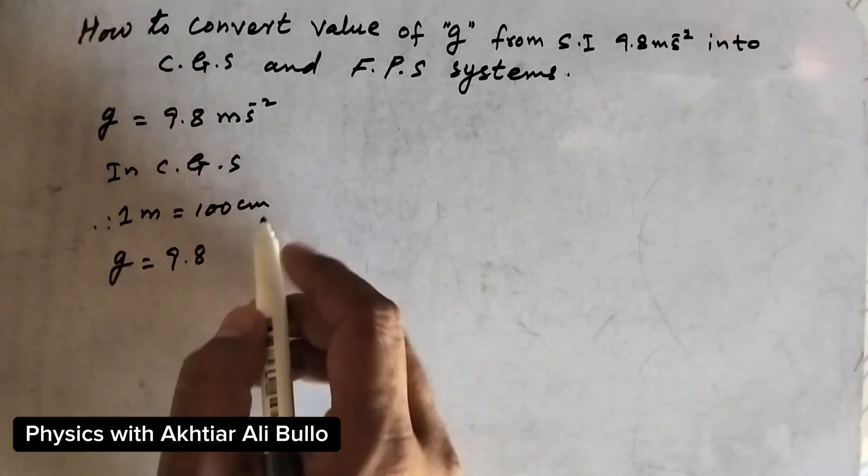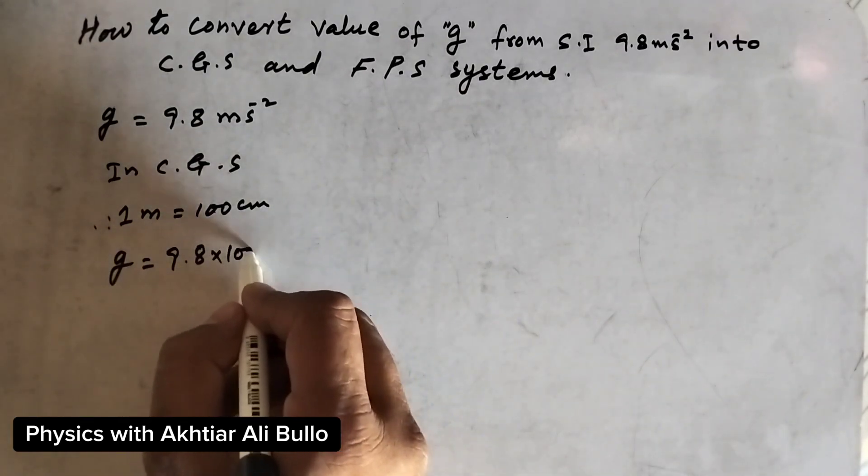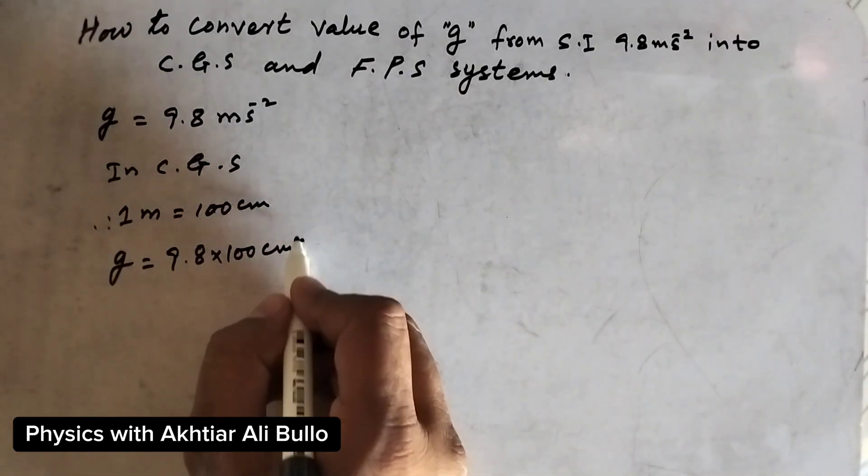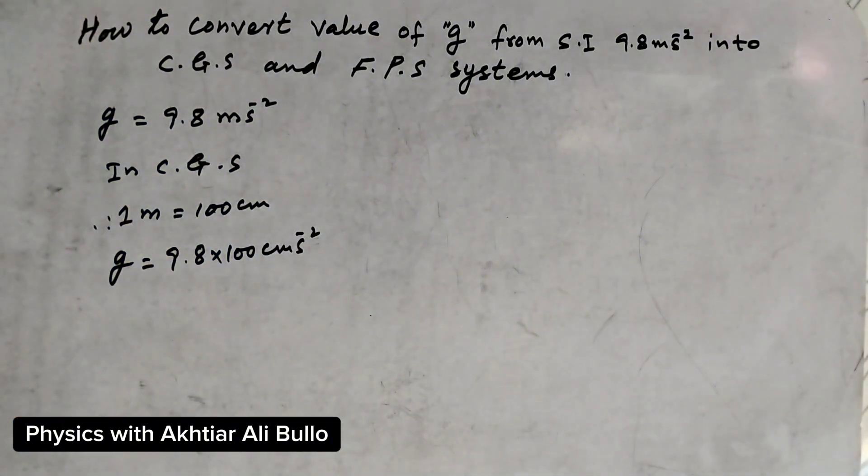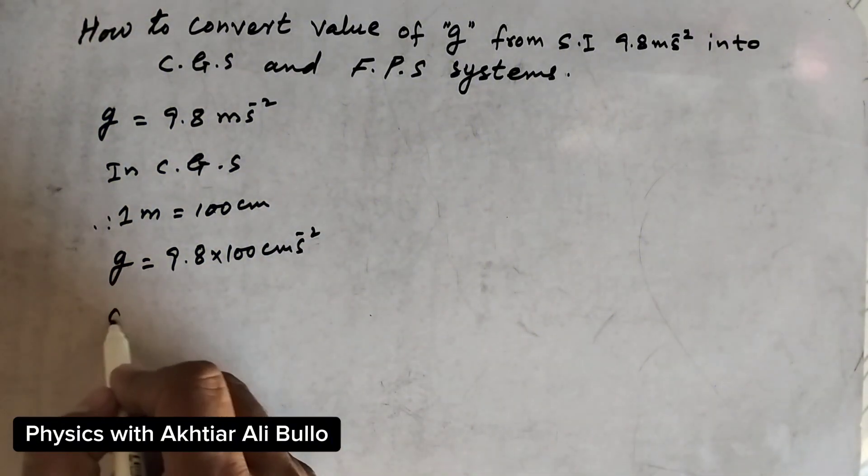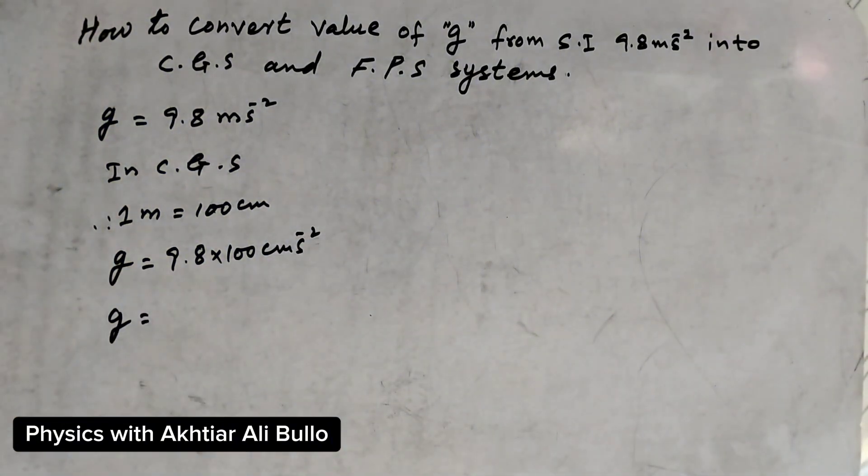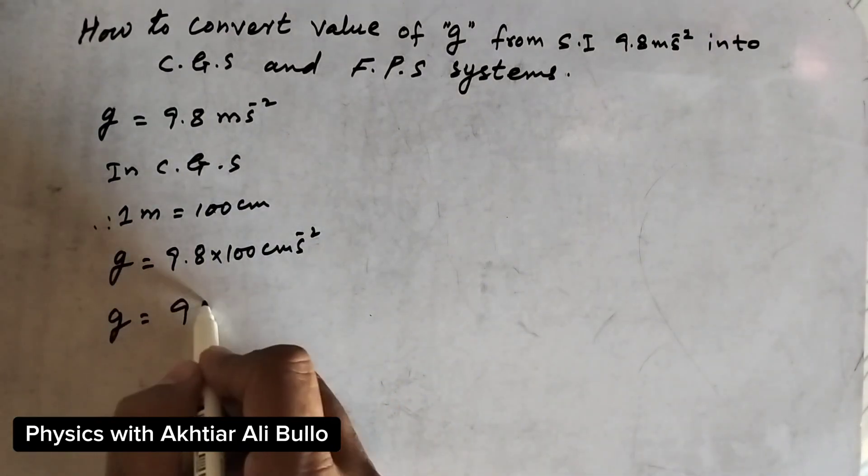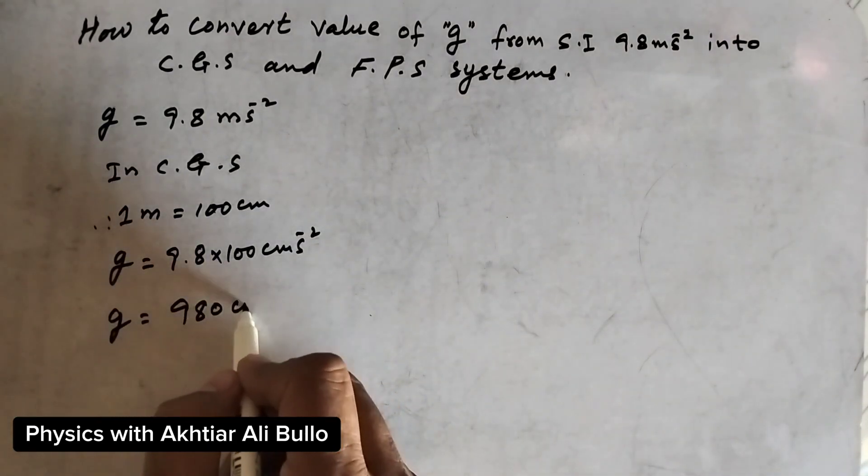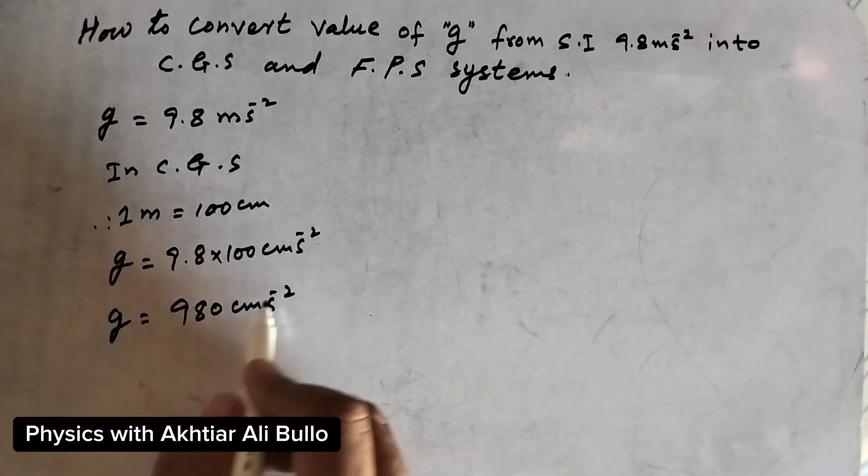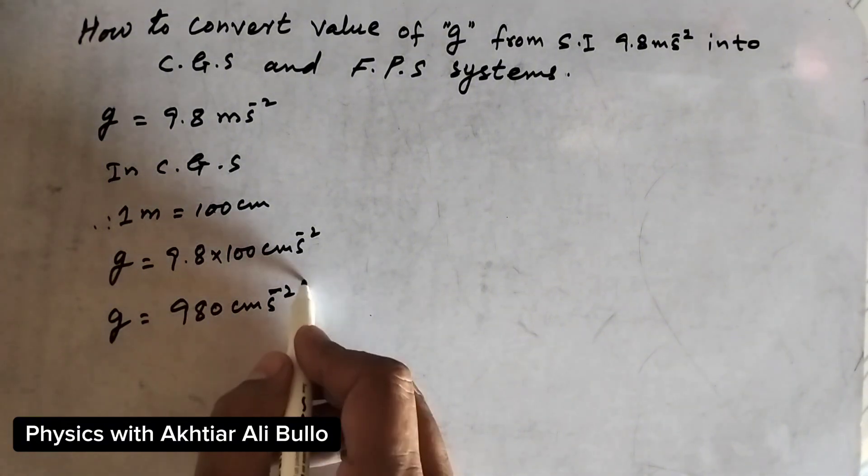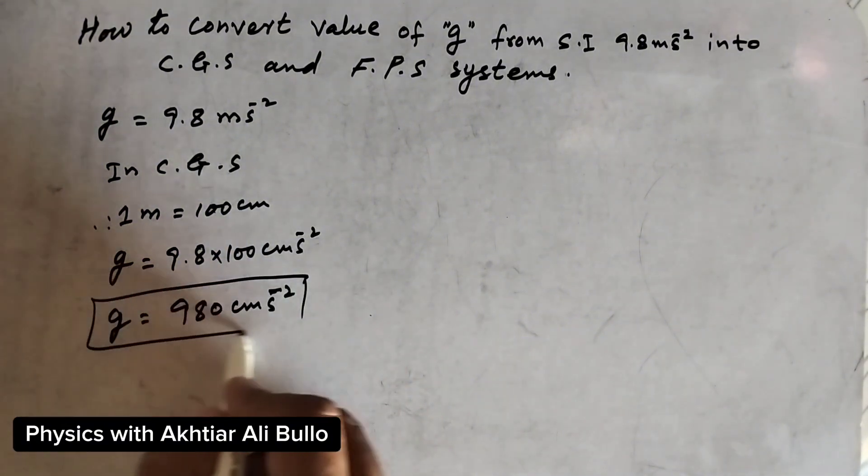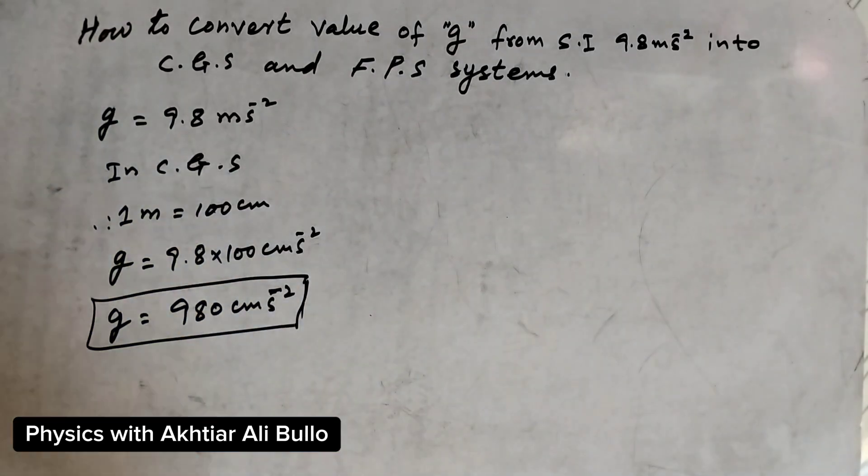This gives us g equals 9.8 times 100, which equals 980 centimeters per second squared. This is the required value for the CGS system.